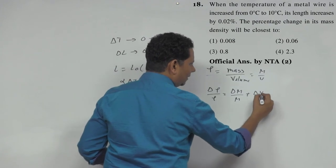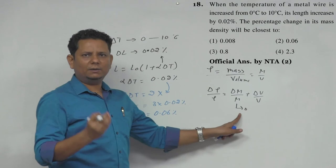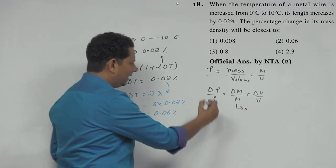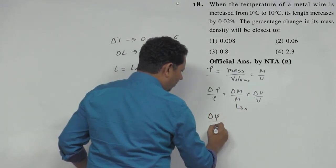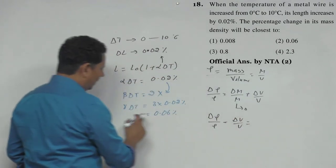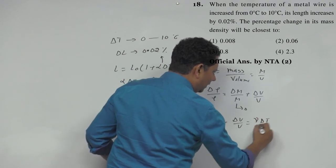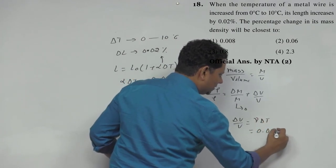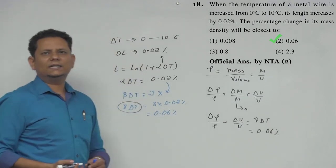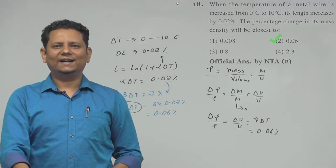Now this will be equal to gamma delta T, which is equal to 0.06%. So based on this, we can say that option number 2, 0.06%, would be the right answer.